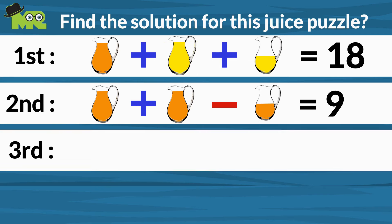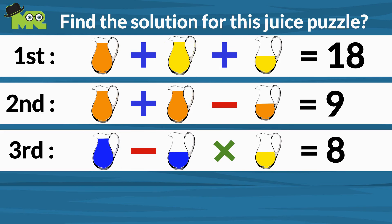The third equation is a jug of blue juice minus half a jug of blue juice multiplied by half a jug of yellow juice is equal to 8.